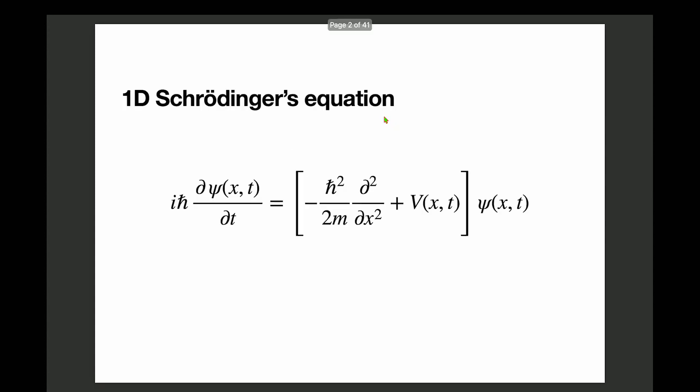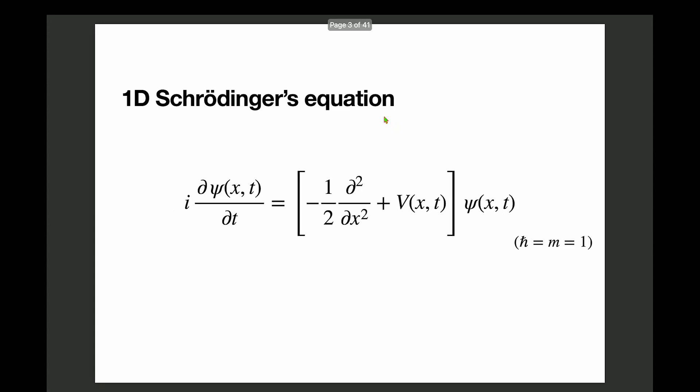So this is the Schrödinger equation, which a lot of you know already. I'll do something very common in computational physics, which is to set any physical constants to 1. That's important because it constrains your problem to ranges of numbers around 1. Given that the numbers we use are floating point, it's better not to go to very high or very low orders of magnitude. Constants like ℏ are around 10 to the minus 34, so setting them to 1 is very useful.